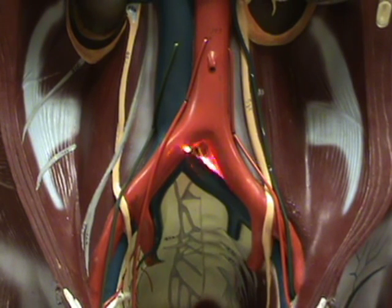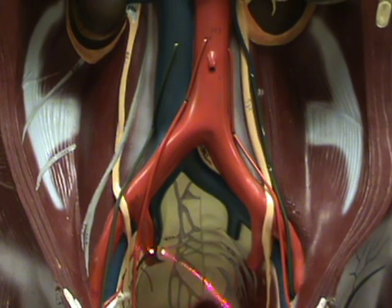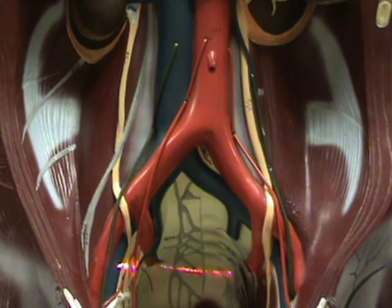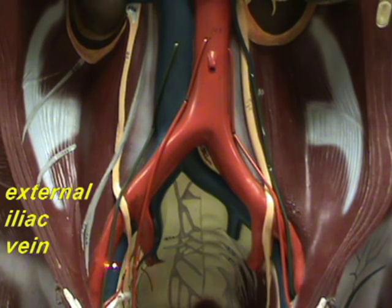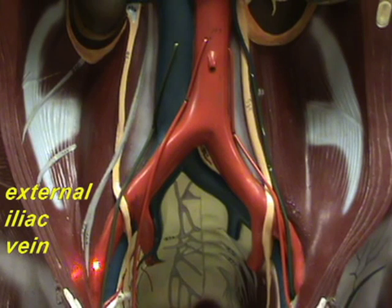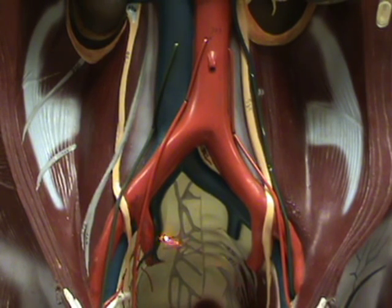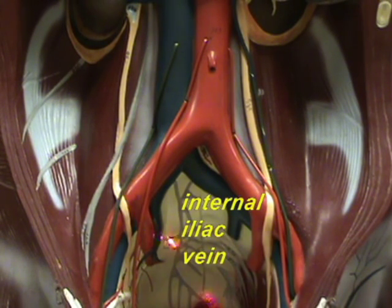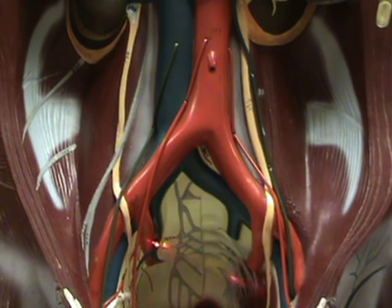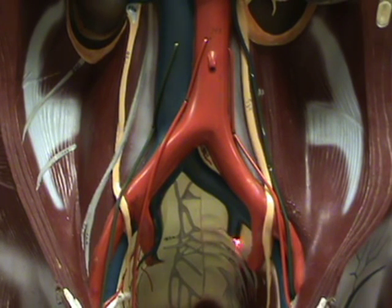First of all, the drainage from the lower limb and the pelvic region is going to parallel the supply. So right over here next to the external iliac vein — here's the external iliac vein right next to the external iliac artery. And right over here we have the internal iliac vein right next to the internal iliac artery. And here you can see the same vessels on the left side.